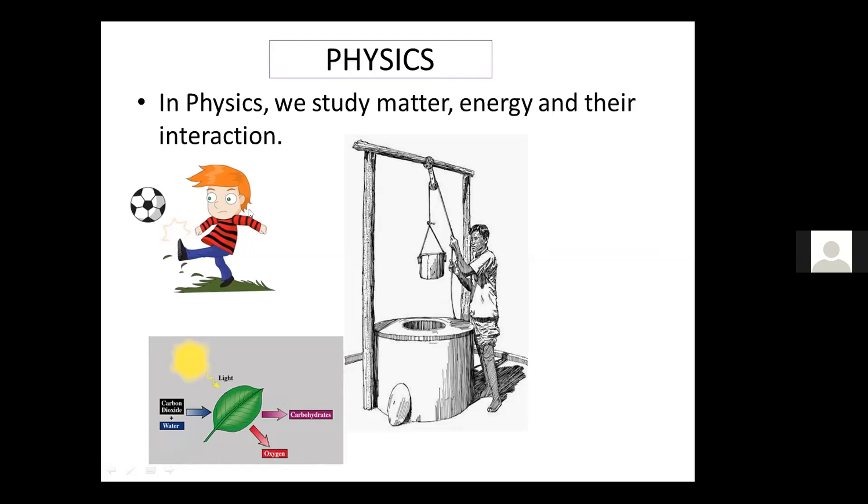In the first picture, matter is ball. The boy is using his energy to kick the ball, and by the interaction of matter and energy, the ball bounces off. In the second picture, man is making use of its energy to pull up the bucket, which is the matter. In the third picture, the leaf which is matter is using sun's energy, and by their interaction, photosynthesis is taking place.